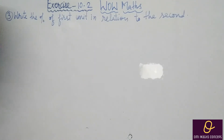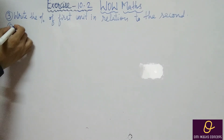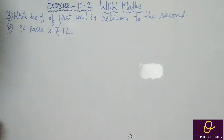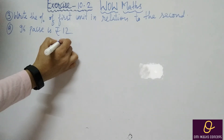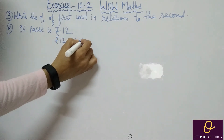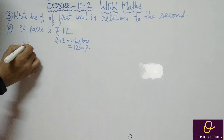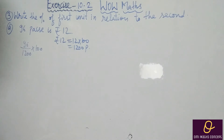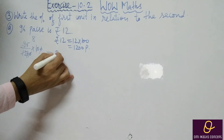Question number 3: write the percentage of the first unit in relation to the second. We have to compare the first unit with the second and find out the percentage. Part A: 96 paise and ₹12. First convert ₹12: 12 × 100 = 1200 paise. Now compare: 96 divided by 1200 into 100. 12 eights are 96, giving 8%.